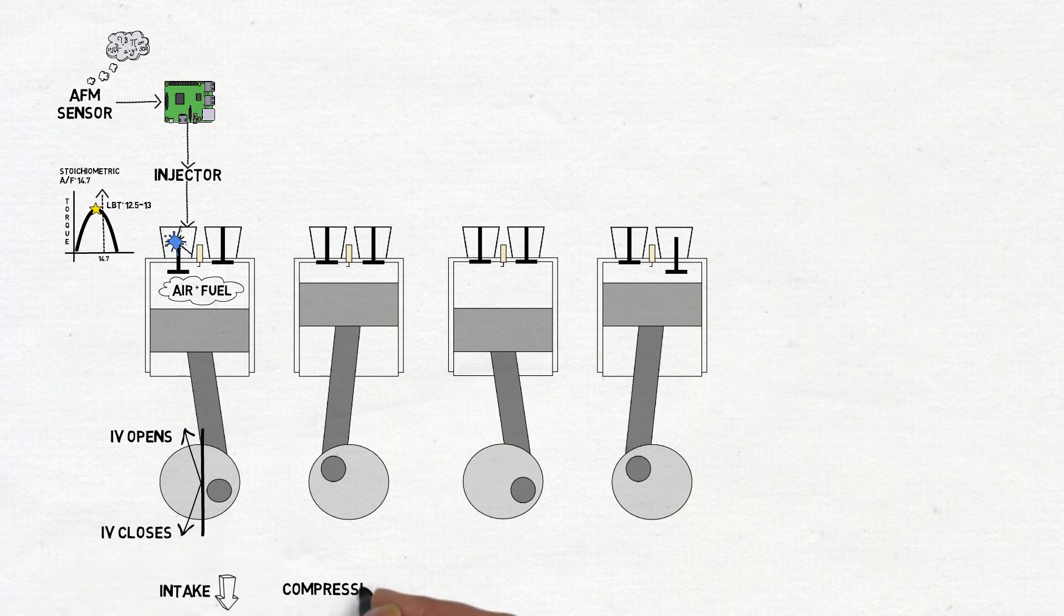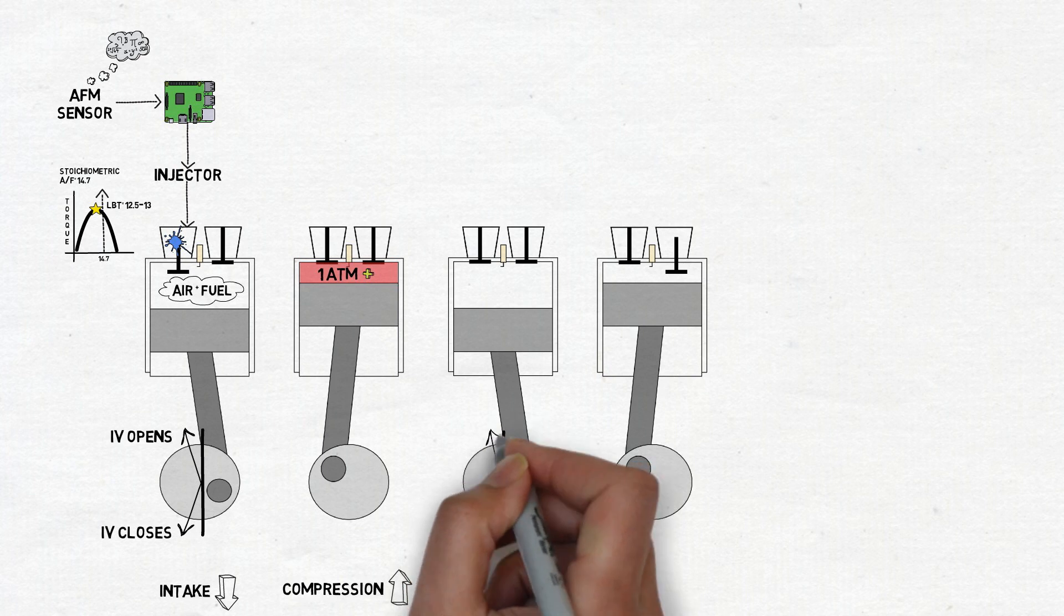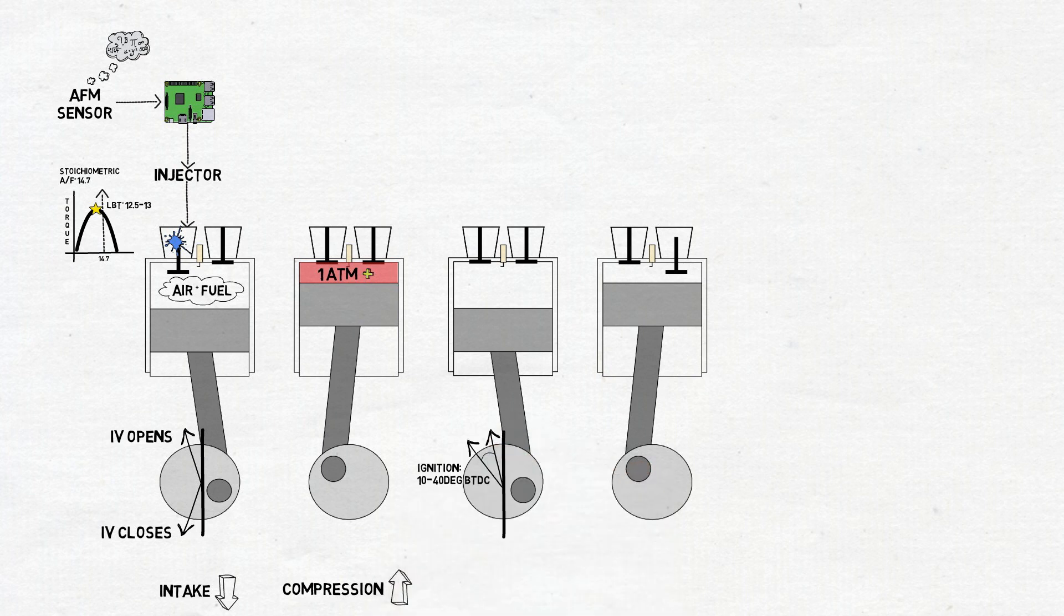Next, on the compression stroke, with both the intake and exhaust valves closed, the piston travels up compressing the cylinder contents above atmospheric conditions. Between 10 and 40 crank degrees before top dead center, the spark plug produces an electrical discharge that triggers combustion. The resulting explosion then pushes down the piston. This burning process usually lasts between 40 to 60 crank degrees.